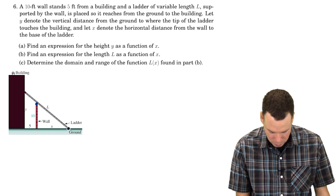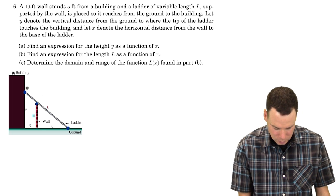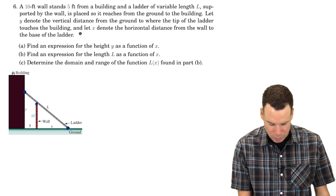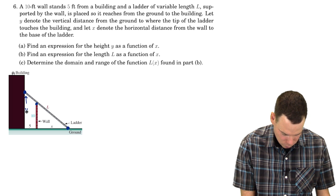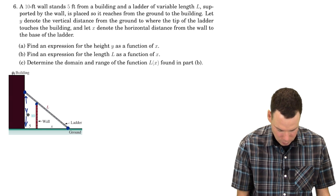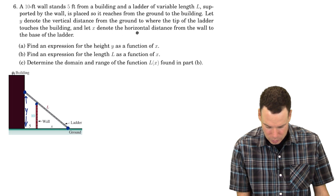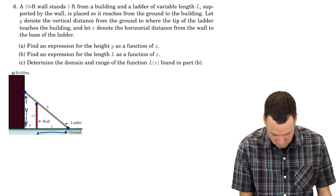It's placed so that it reaches from the ground to the building, so it's in contact with the ground here too, and in contact with the building. Let Y denote the vertical distance from the ground to where the tip of the ladder touches the building. So that's this distance here, there's our Y. And X denote the horizontal distance from the wall to the base of the ladder. There's our X distance there.